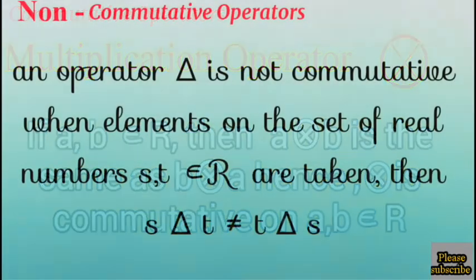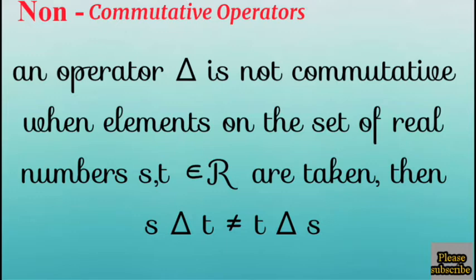Let's look at the non-commutative operator. We have two elements from the set of real numbers. We use one of the elements to operate on the other, like S operates on T. And after that, we use T to operate on S. And the results are compared and they are not the same. Then, such operator is not commutative.